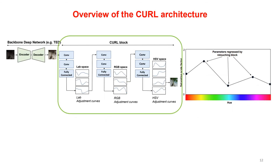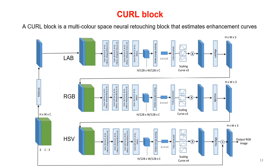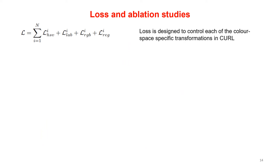Next, we describe the CURL block, which is the primary contribution of this paper. The image part of the tensor is converted to LAB color space. The topmost branch estimates and applies a scaling curve in LAB space. The transformed image, along with the original features, are then passed to the middle branch, which estimates and applies a scaling curve in RGB color space. Finally, a similar transformation is applied in HSV space. In HSV space, we have an additional curve to adjust saturation as a function of hue. We train CURL end-to-end using a combined loss computed in each color space, and also include a regularization term designed to keep the estimated curve smooth.